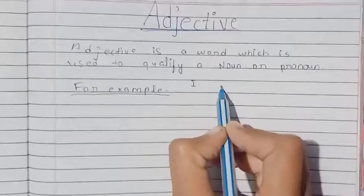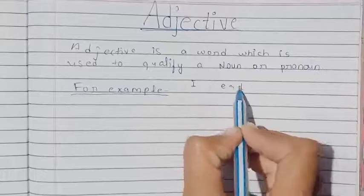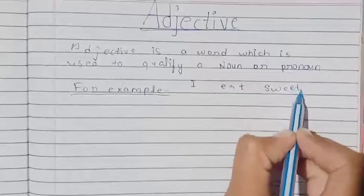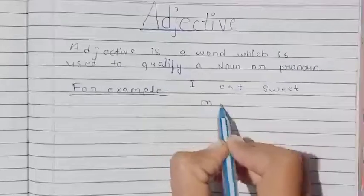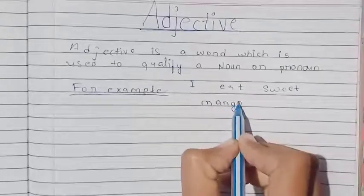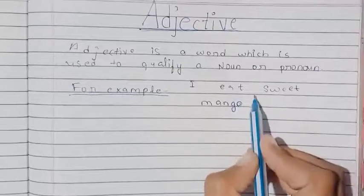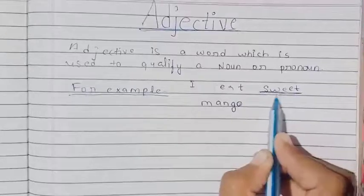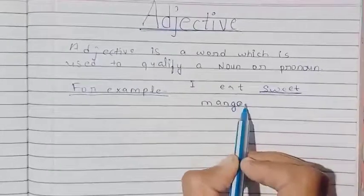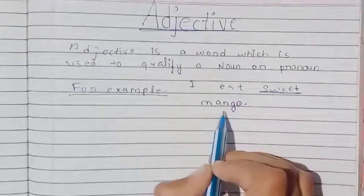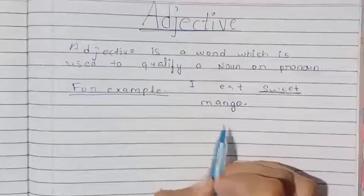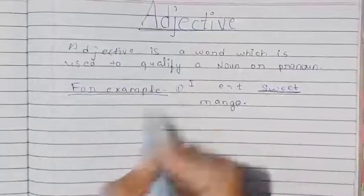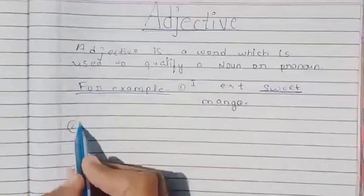I eat sweet mango. Here, 'sweet' is an adjective. Sweet is telling the taste of this mango. तो, sweet इस mango की quality को दर्शा रहा है। यहाँ पर यह sweet adjective है।